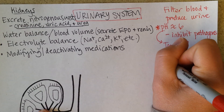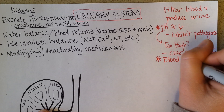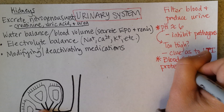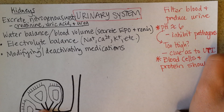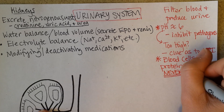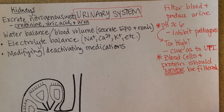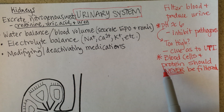Another key idea we'll come back to numerous times is that blood cells — white blood cells, red blood cells, platelets — and proteins such as albumin, fibrinogen, angiotensinogen, et cetera, and hormones, these things should never be filtered. They stay in the blood and do not enter the tube system of the filtering apparatus of the kidneys. If you are finding blood cells or protein in the urine, meaning they were being filtered, that is a sign of kidney damage.